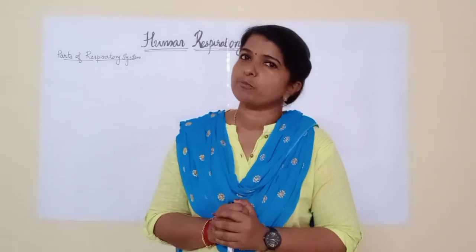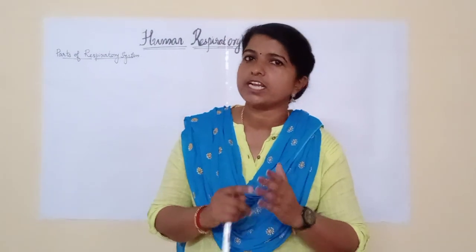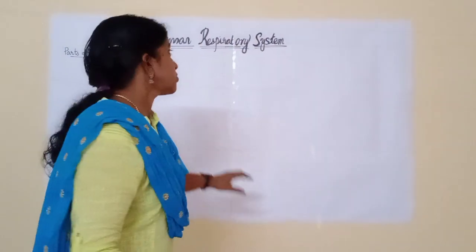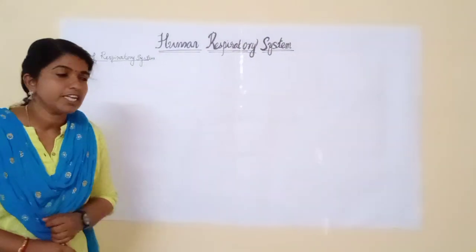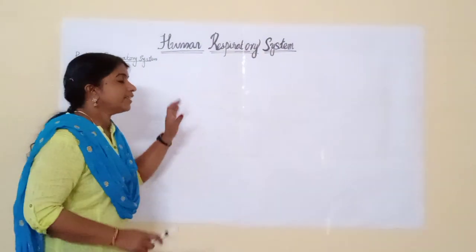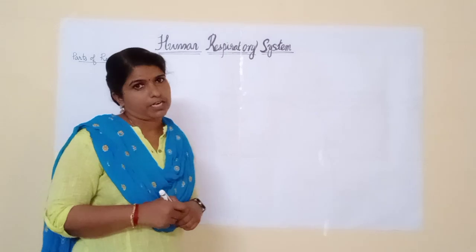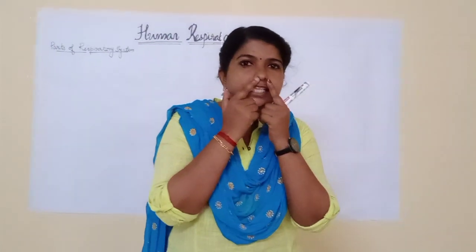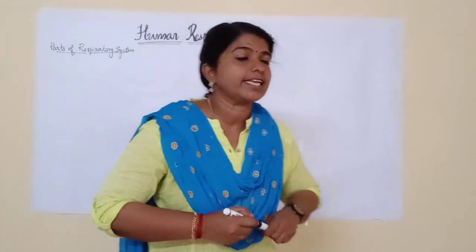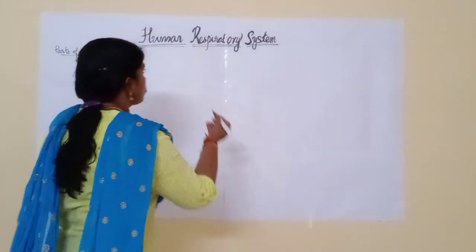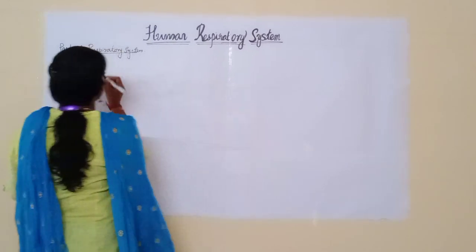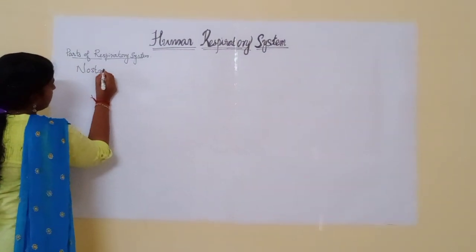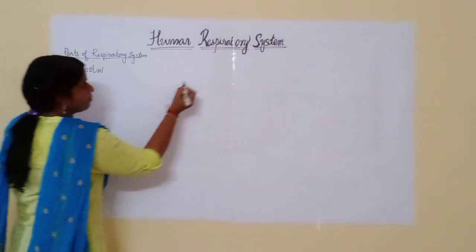What are the parts of the human respiratory system? So, the first part of the human respiratory system is the nostril. Here you can see two holes — that is the nostril.